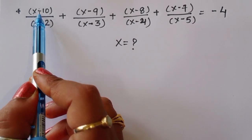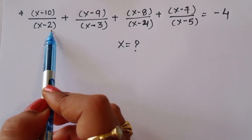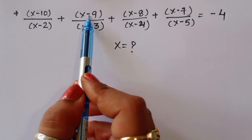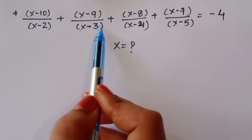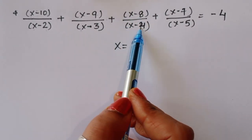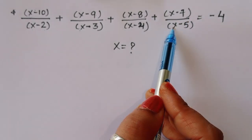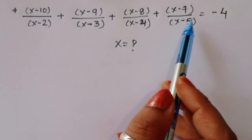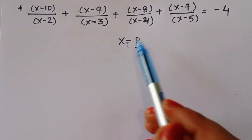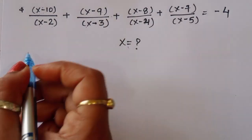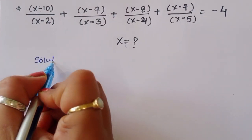Given: (x minus 10) divided by (x minus 2) plus (x minus 9) divided by (x minus 3) plus (x minus 8) divided by (x minus 4) plus (x minus 7) divided by (x minus 5) is equal to minus 4. We have to find out the value of x. Let's see the solution.